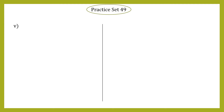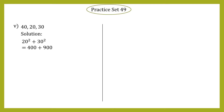Let's continue with sub-question 5: sides are 40, 20, 30. We need to check whether these sides belong to a right angle triangle or not. Step one: take the sum of squares of the two smaller sides, that is 20 and 30. So 20² + 30² = 400 + 900 = 1300. This can be taken as equation number one.